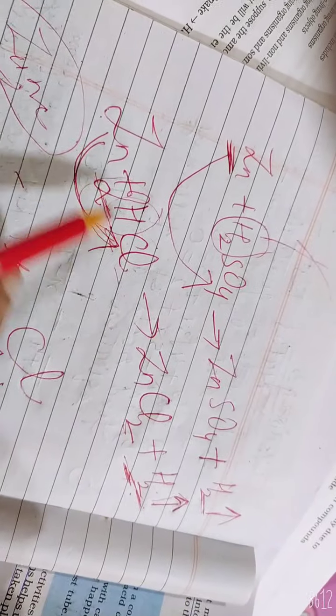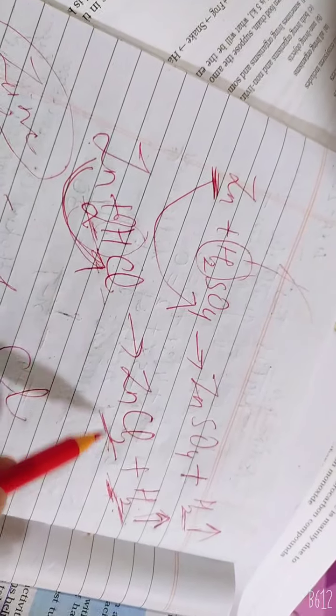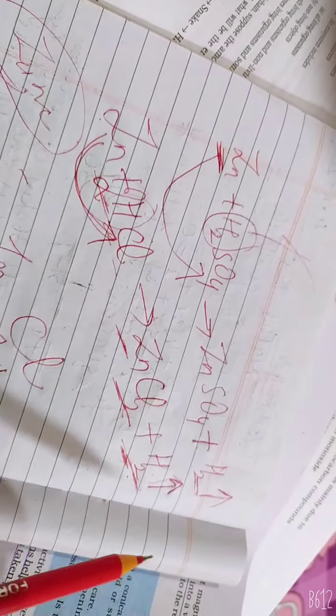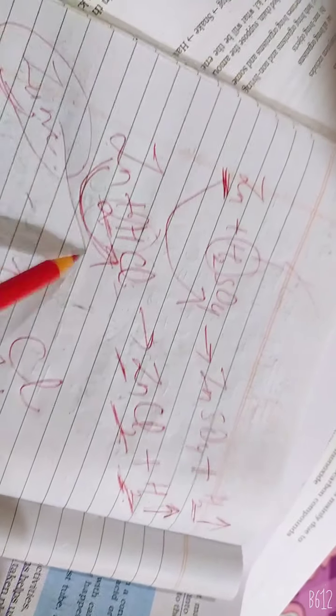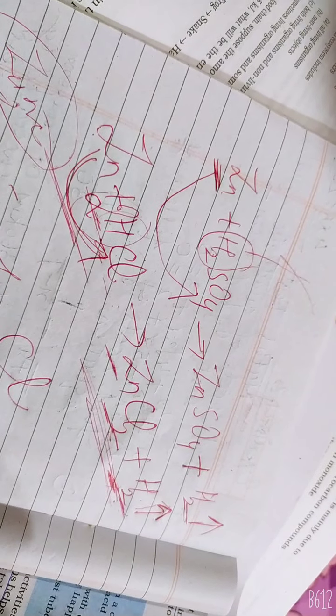There is also 2 chlorine. Here also 2 chlorine. Here there is one Zinc, so here also one Zinc. So now what will be the Balanced Chemical Equation? Left side and right side, the number of atoms are equal. This is called Balanced Chemical Equation.